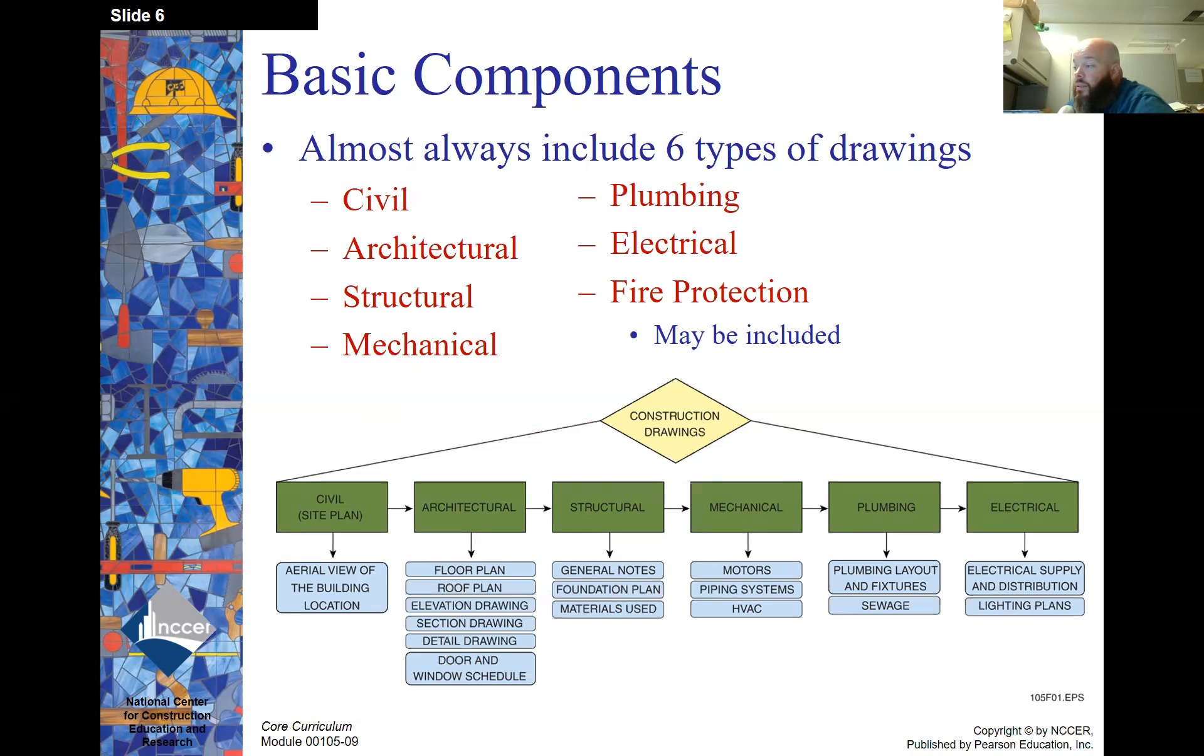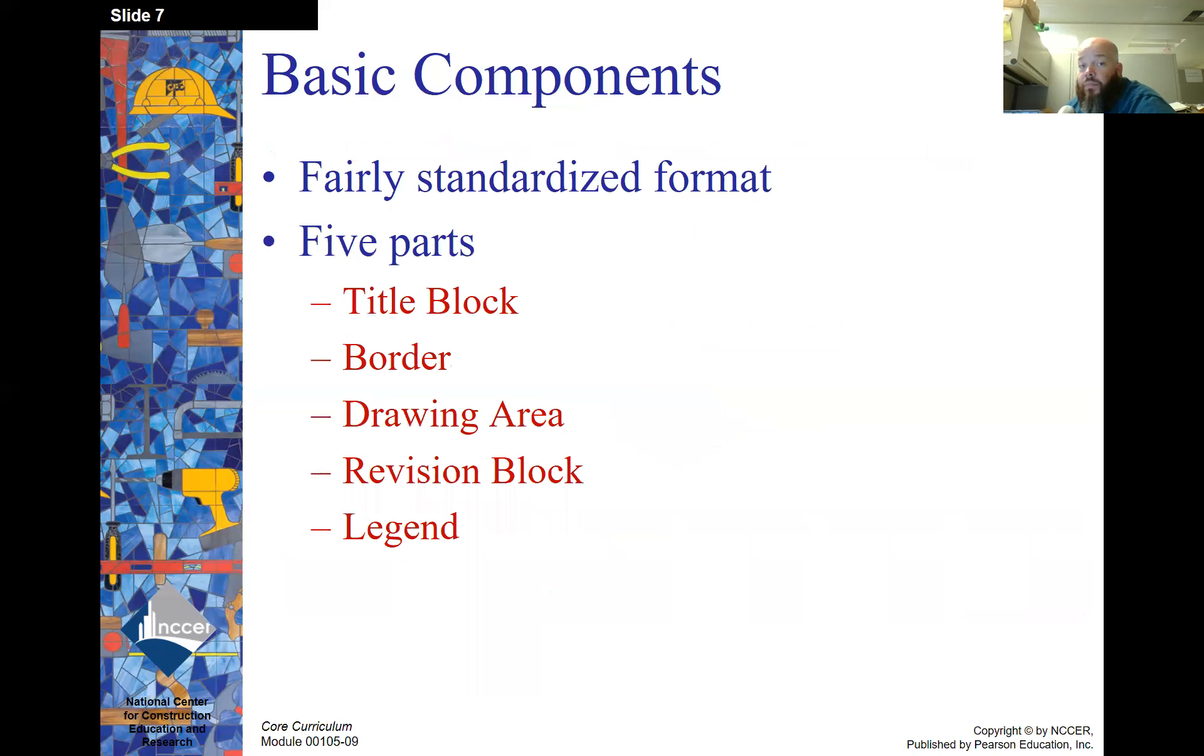So what you want to look at here, this figure that's shown here, actually is in your book as well. Review this figure and make sure you know what components are found on the different drawings. So if we look at these types, if we look at the mechanical, it's going to include your piping systems, your HVAC, any motors. Plumbing is plumbing layout, fixtures, and sewage. So just pay attention to that. Look over those.